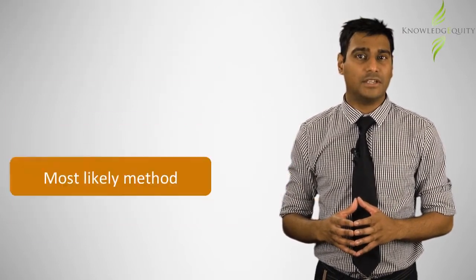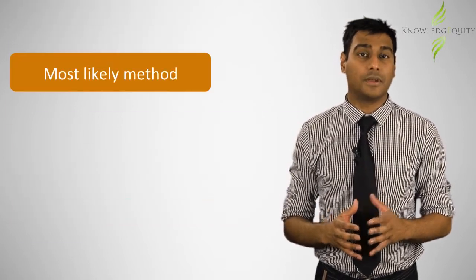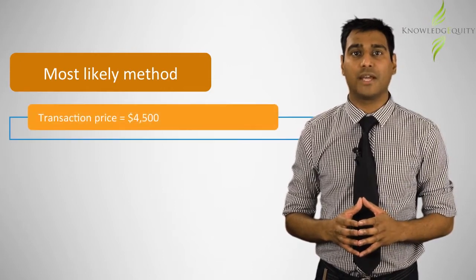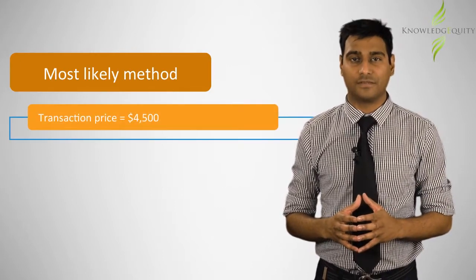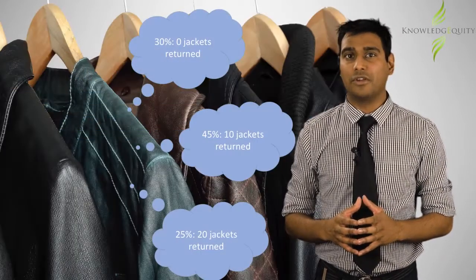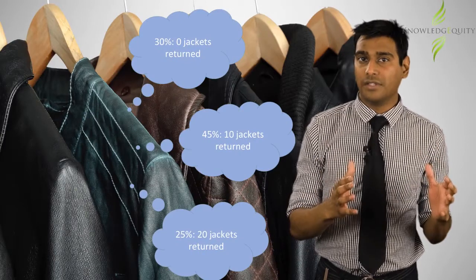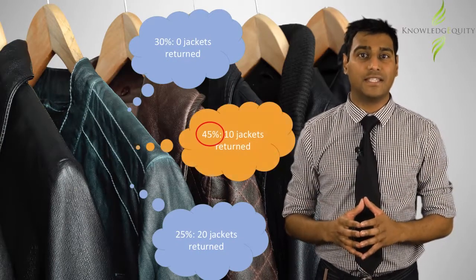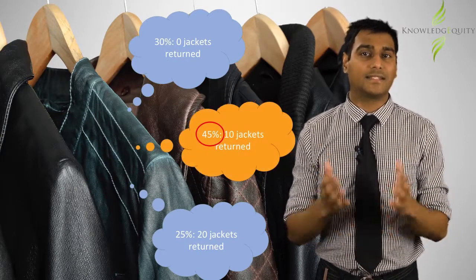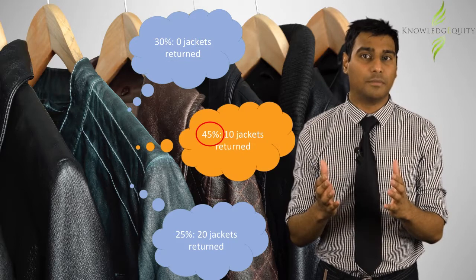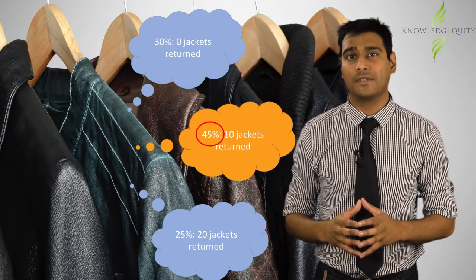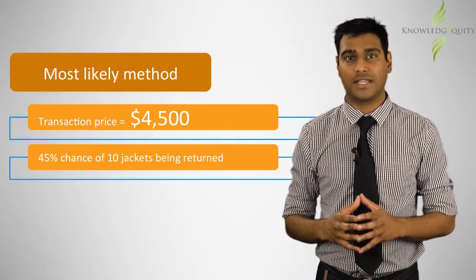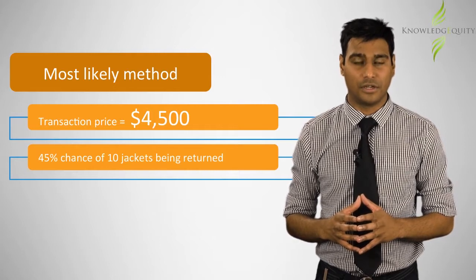If Fashion Limited uses the most likely method, then the transaction price would be $4,500. This is because, of all the scenarios, the one where the customer would return 10 jackets has the highest probability, which is 45%. So the most likely transaction price would be $4,500.